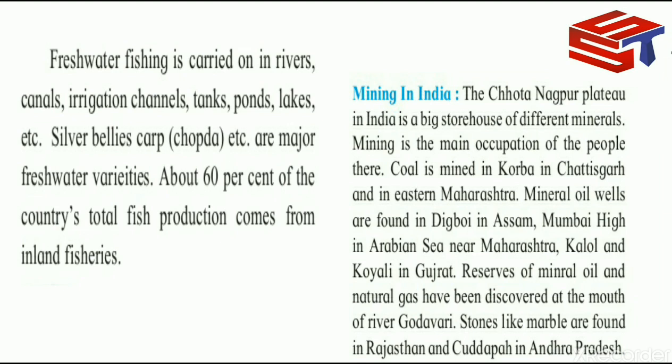Fresh water fishing is carried on in rivers, canals, irrigation channels, tanks, ponds, and lakes. Silver bellies, carp (also called chopra), etc. are major fresh water varieties. About 60% of the country's total fish production comes from inland fisheries — so 40% is marine fishing and 60% is inland fishing.